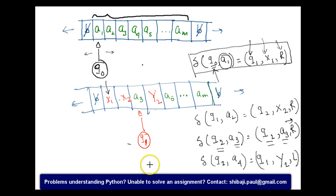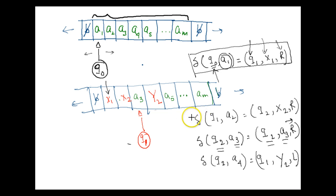So we can now understand how transition rules are written, how the head can be moved towards right and left, and how the tape symbol can be changed. In the next video I am going to formally define the Turing machine.